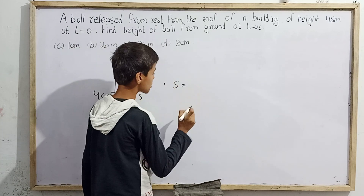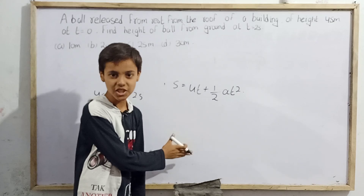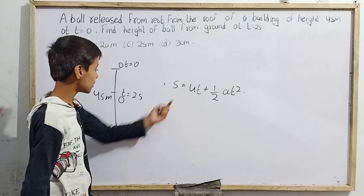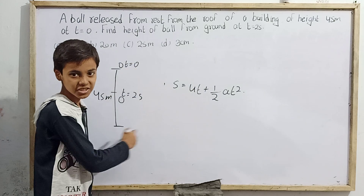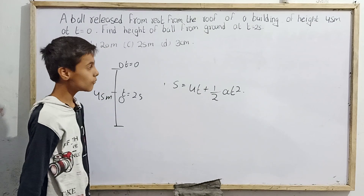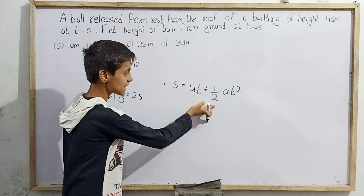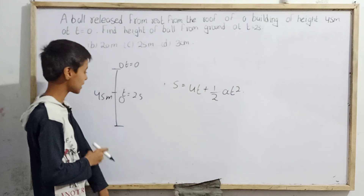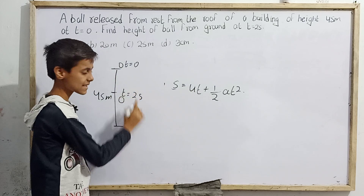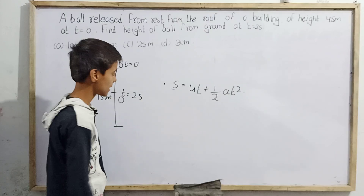The second equation of motion is: s equals ut plus half a t squared. According to this, we should not try to find the distance covered for the whole fall to the ground. Instead, we will apply this equation only from t equals zero to t equals two seconds — putting t equals two seconds to find the distance covered in those two seconds.